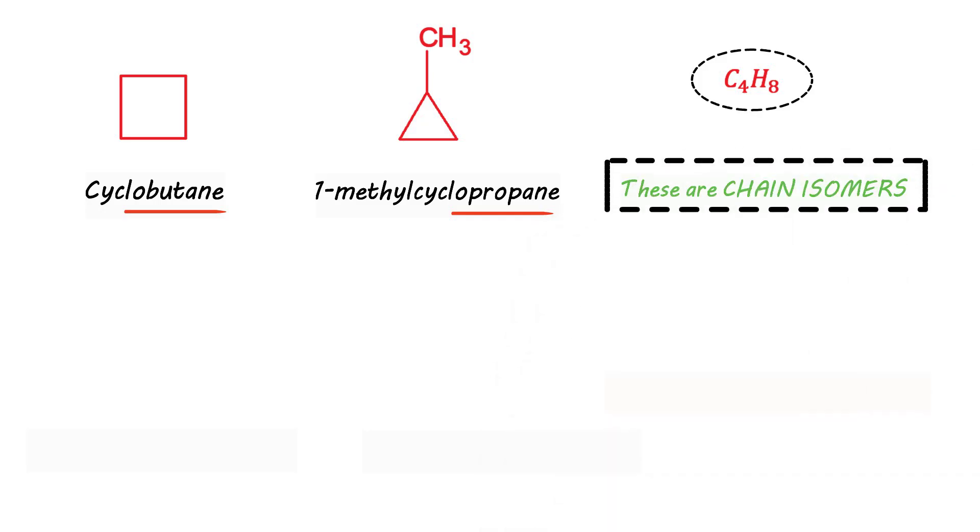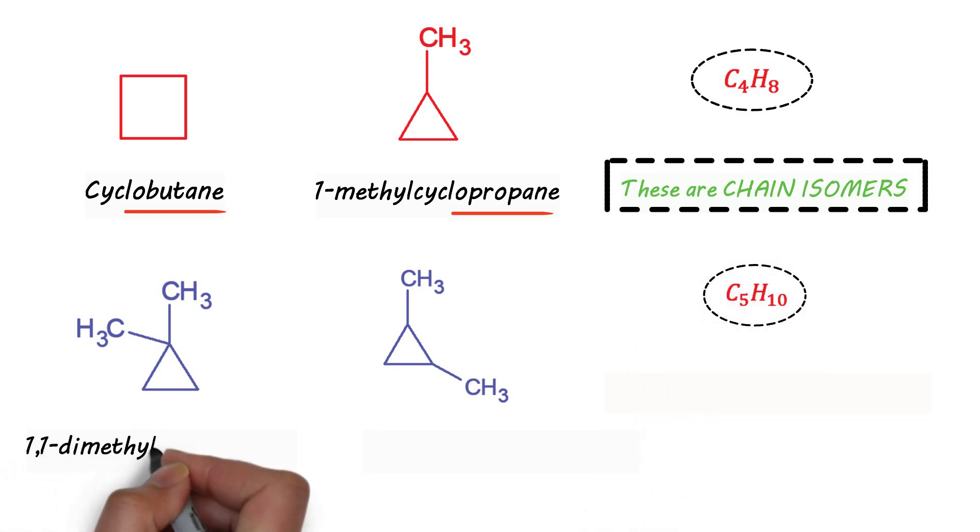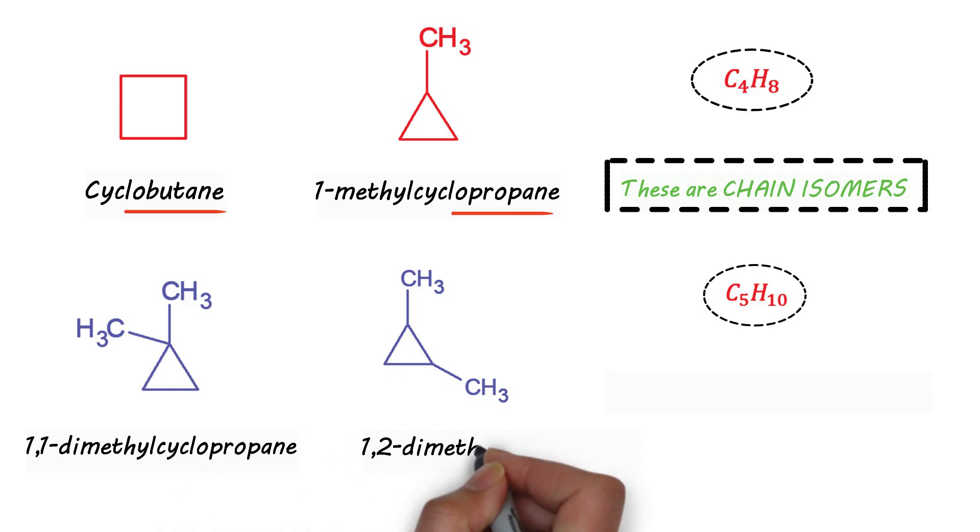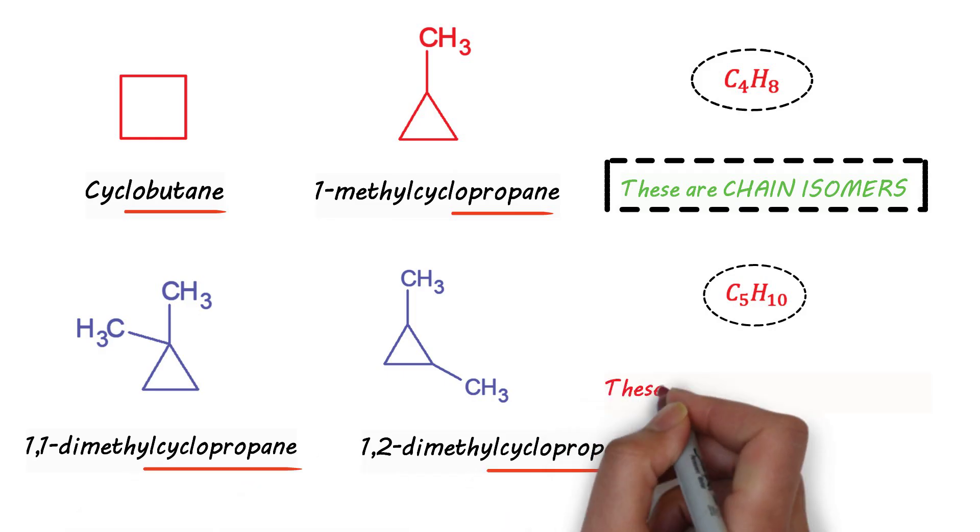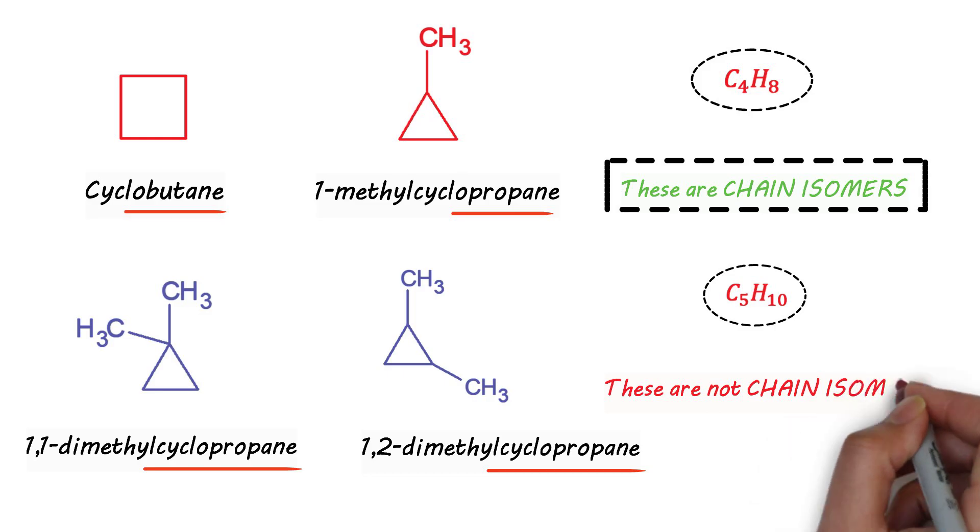However in the third case these two molecules are having same molecular formula of C5H10, but while looking at their names we have 1,1-dimethylcyclopropane as the first molecule. Second molecule is 1,2-dimethylcyclopropane. Now in both these molecules the mother chain, that is cyclopropane, remains the same. So these are not chain isomers.